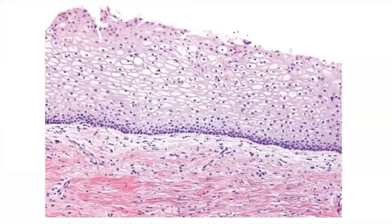This is exocervical mucosa with stratified squamous epithelium. You can see that the basal layer has a single layer of cells with nuclei perpendicularly oriented to the basal lamina. As the cells mature, the nucleus-to-cytoplasmic ratio decreases and the cells acquire a clear appearance with glycogen in the cytoplasm.